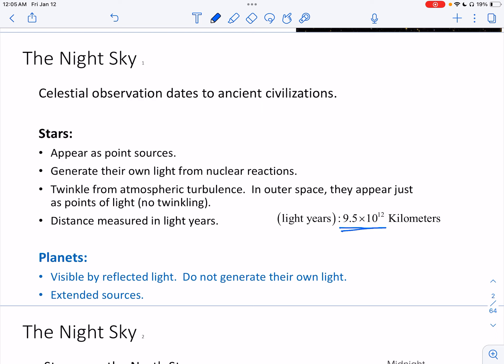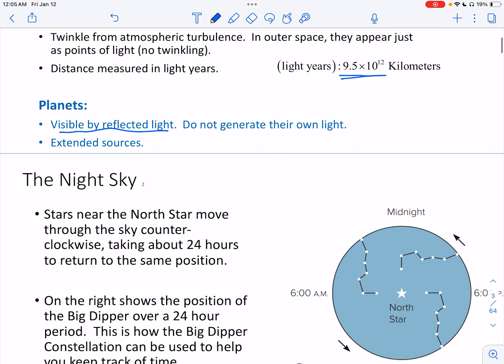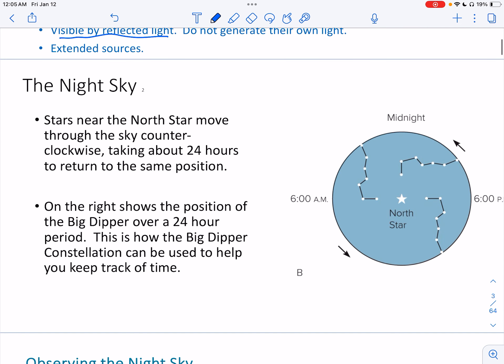Okay so remember our planets do not generate their own light. Planets are visible by reflected light. In the night sky, stars near the north star move through the sky in a counterclockwise fashion. So they move this way. It takes about 24 hours for those same stars to reach the same position.